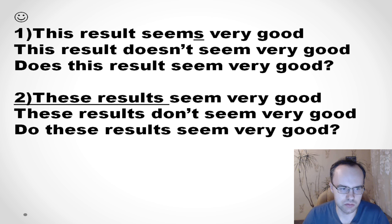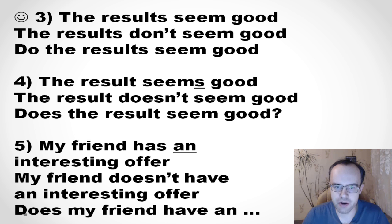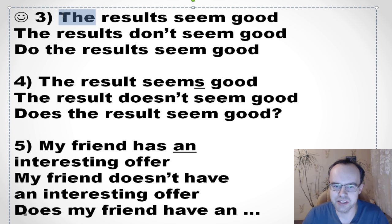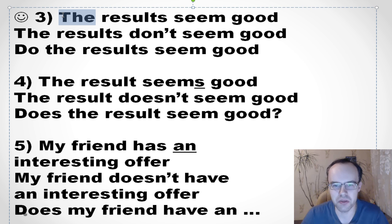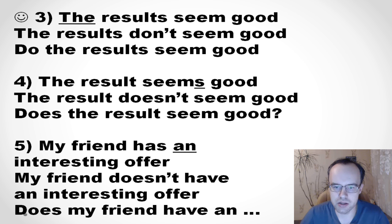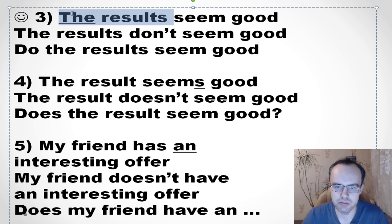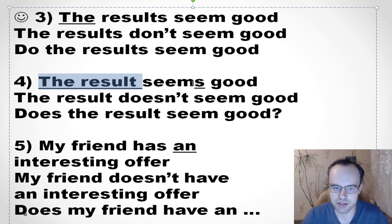Don't forget to use the article. If you say 'results don't seem very good' without an article, it's too abstract — it means all results in the world. But you're talking about specific results, so say 'the results seem good. The results don't seem good. Do the results seem good?' And if it's singular — 'the result' means it, so add S: 'The result seems good. The result doesn't seem good. Does the result seem good?'